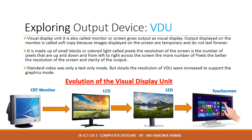A VDU is made up of small blocks of colored light called pixels. The resolution of the screen is the number of pixels across and down the screen. The more number of pixels, the better the resolution and the clarity of the output. The standard VDU was originally a text-only mode but slowly the resolution was increased to support graphics mode. The CRT monitor was the first, then LCD, then LED, and now we have touchscreen devices.